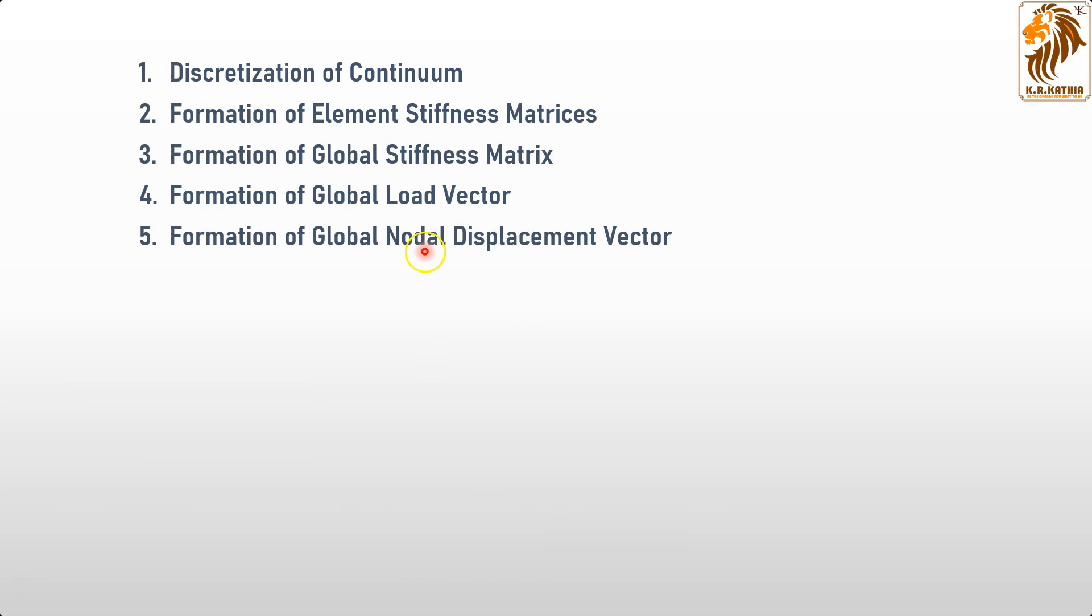Then we have assembly of global stiffness, nodal displacement, and load equations. Points three, four, and five that we obtained will form an equation matrix. This ultimate matrix will help us find the complete displacement of the nodes.